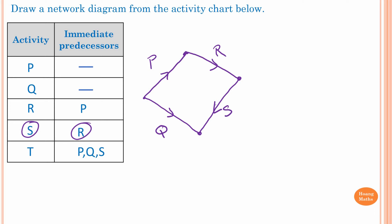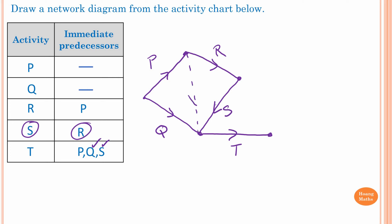This is Activity S. For T, we draw Activity T here. T has predecessors S and Q, but we also need to connect P. Remember, you cannot draw a solid line — if you draw a solid line, that represents an actual activity, and there is no activity between T and P. So we need a Dummy Activity here, connected with a dotted line to show it is a Dummy Activity.